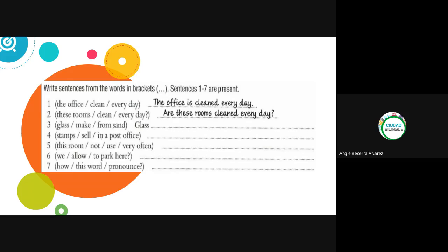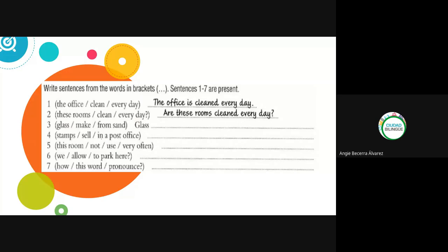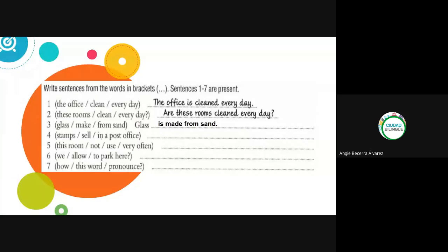Number three: 'Glass make from sand' — no question mark, no negation, so it's an affirmative. In present passive: 'Glass is made from sand.' Very good, perfect.